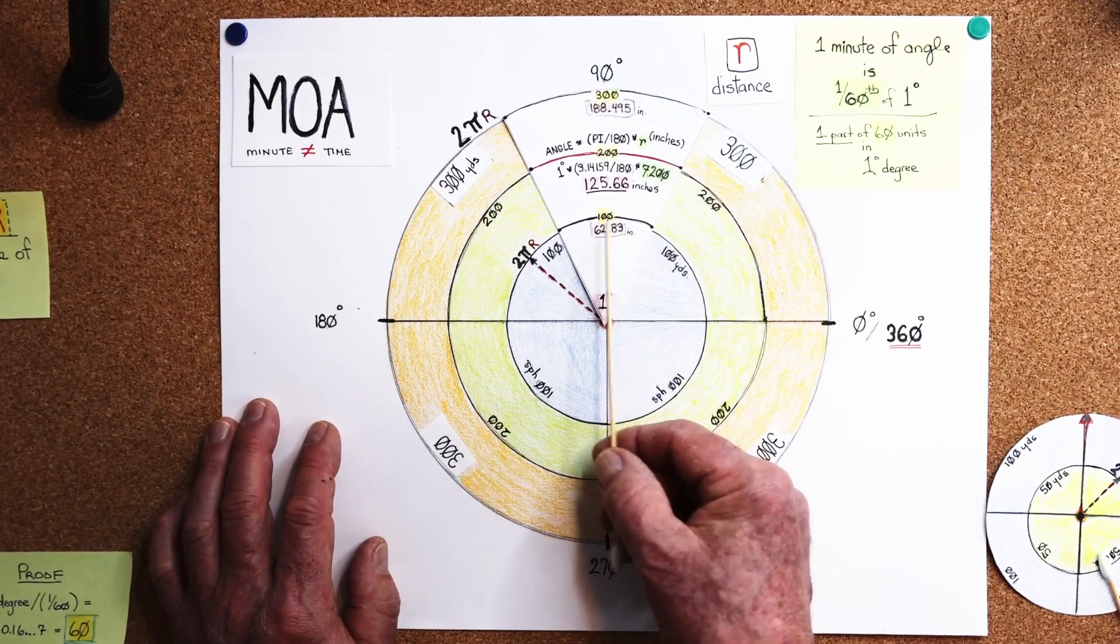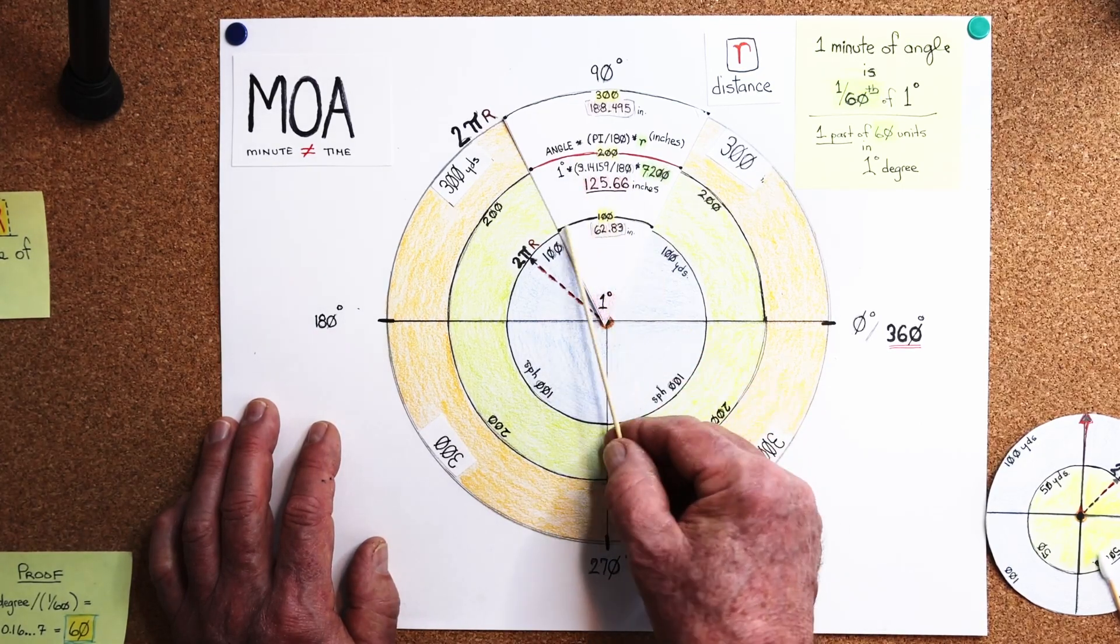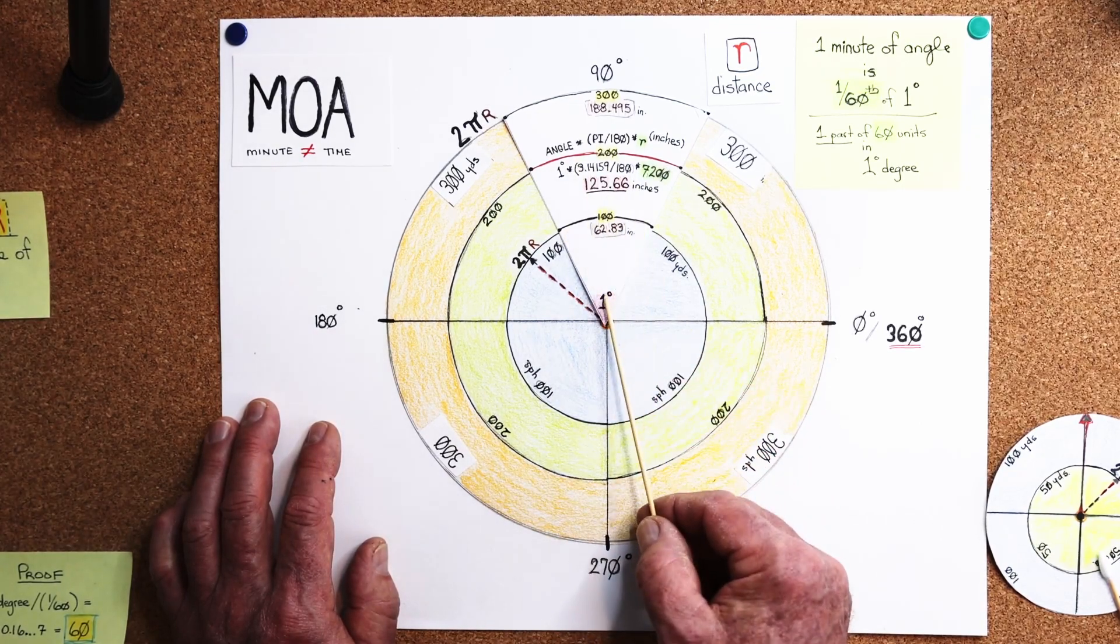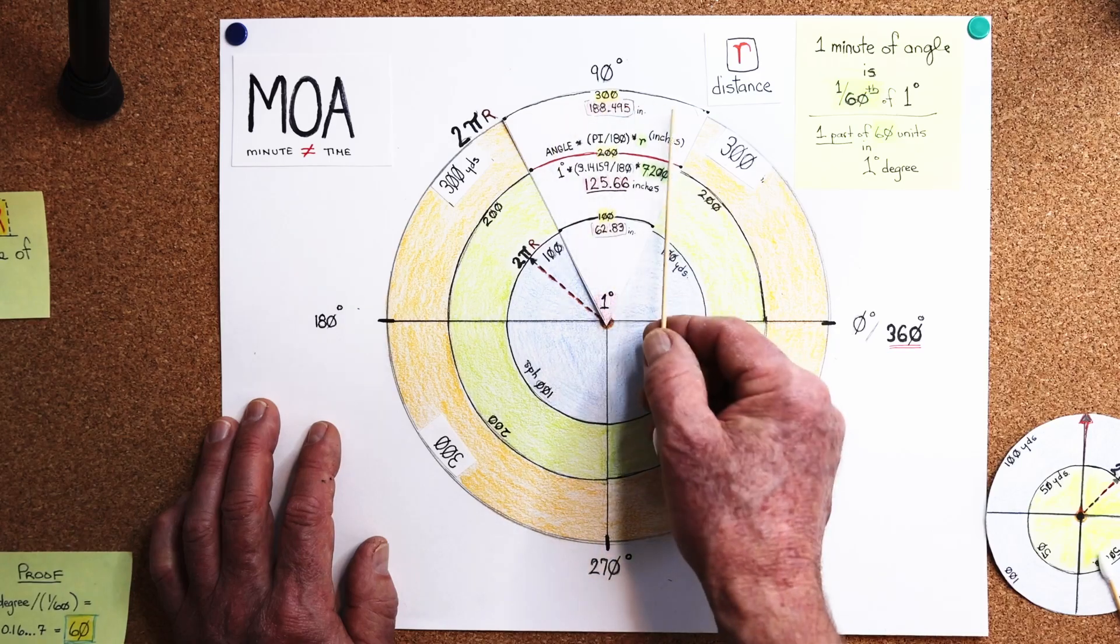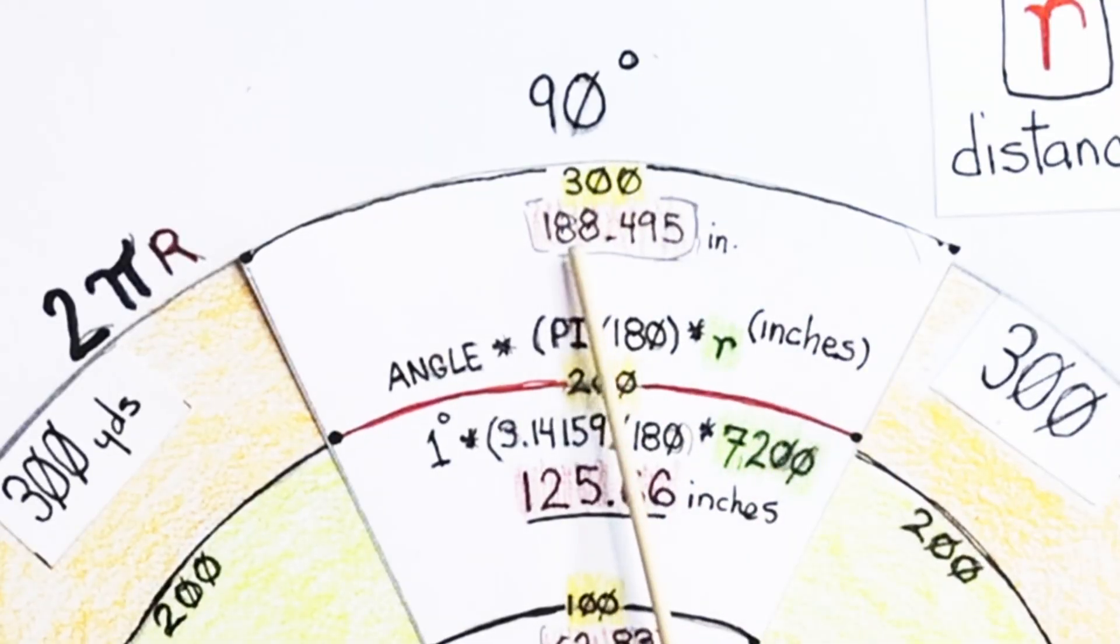So at 100 yards, if I do the same equation up here, the arc length in one degree all the way across is 62.83 inches. And then up here, at 300 yards, the length of this arc is 188.495 inches.